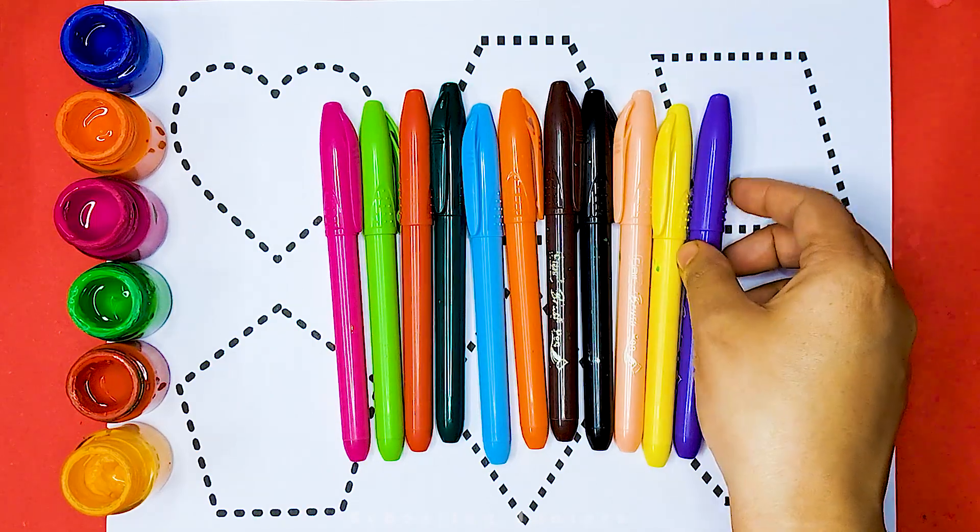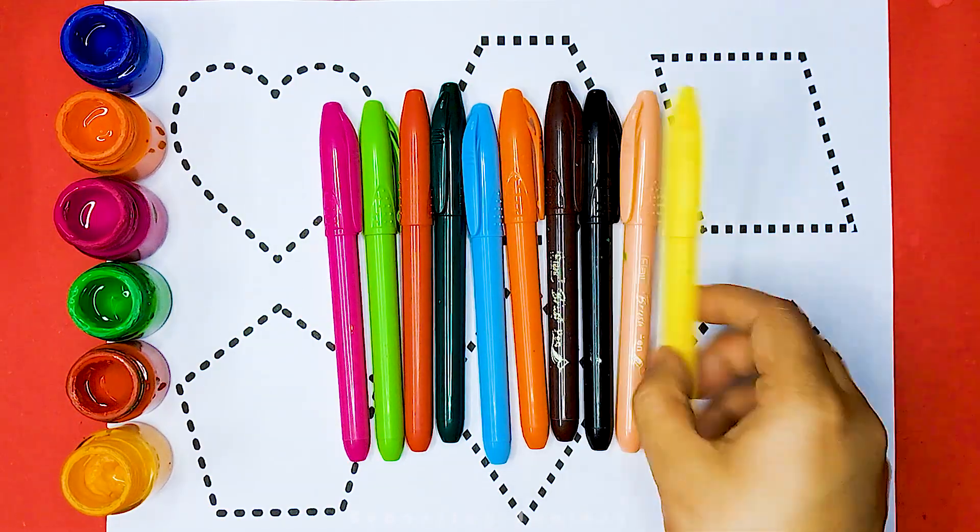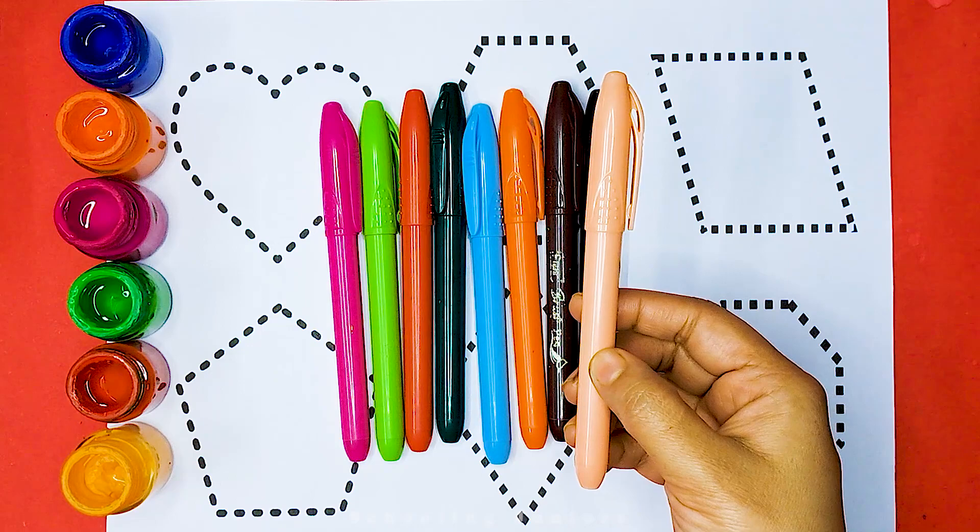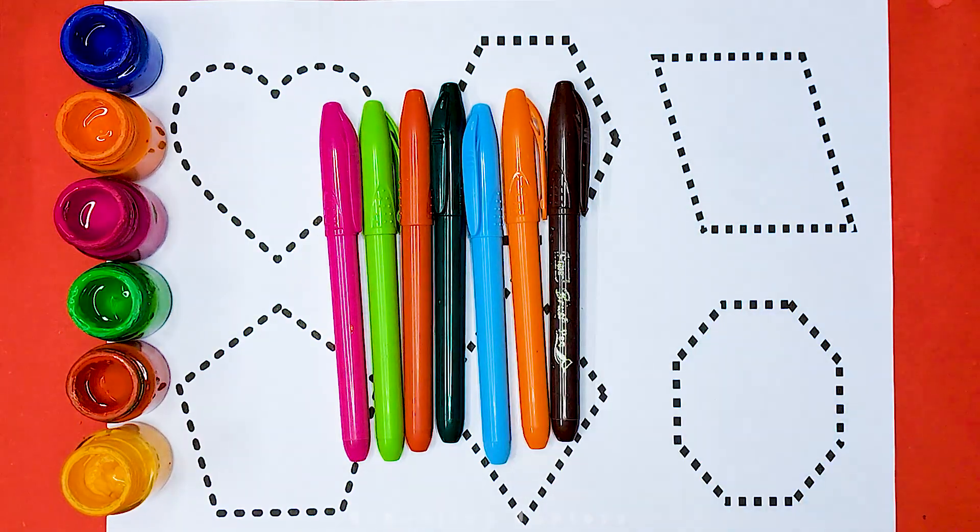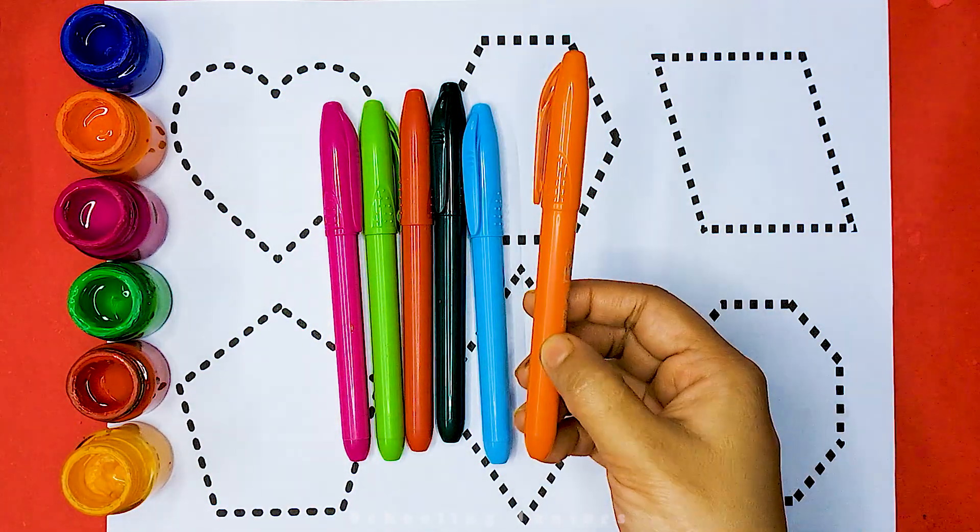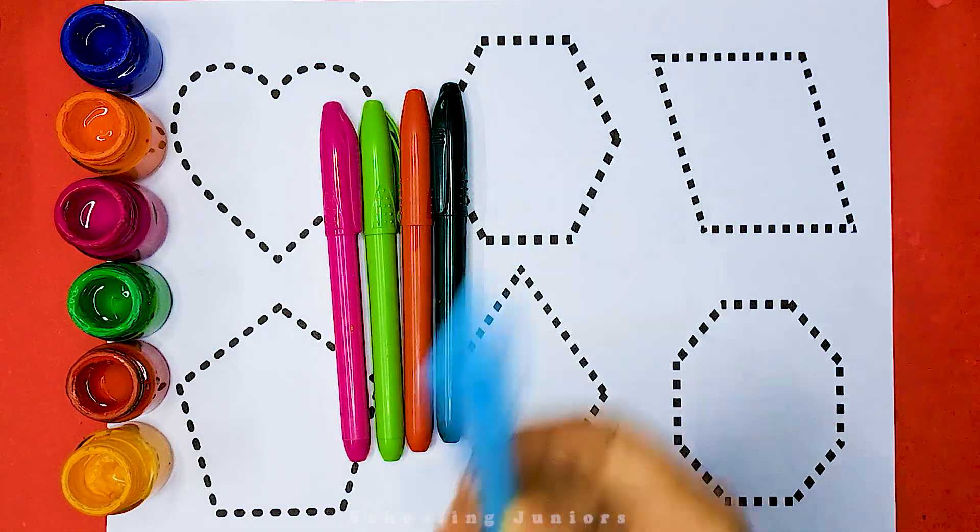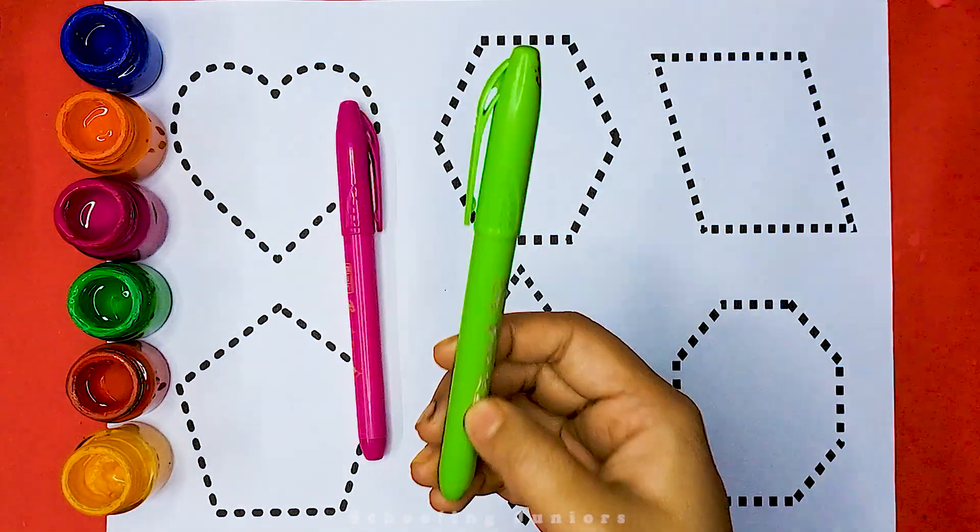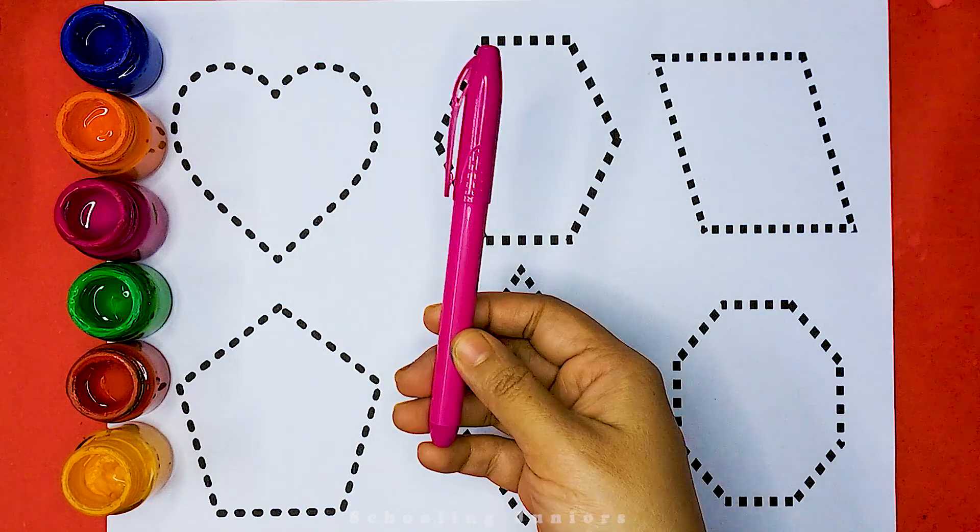Let's learn some color names. Purple color, yellow color, light orange color, black color, brown color, orange color, sky blue color, green color, red color, light green color, pink color.